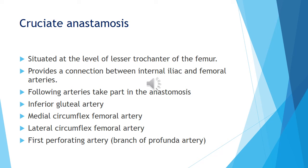The cruciate anastomosis involves the internal iliac artery, the medial circumflex femoral artery, the lateral circumflex femoral artery, and the perforating artery. This anastomosis is centered on the femoral artery region and represents an important collateral circulation in the gluteal area.